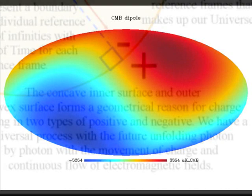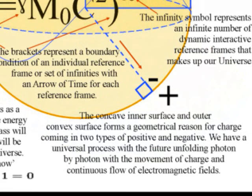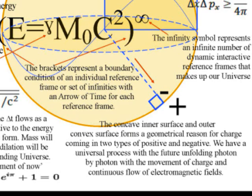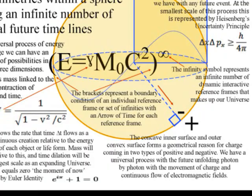In this theory, hyperbolic geometry was formed by the two-dimensional surface of the spherical harmonics, with the inner concave surface representing negative charge, and the outer convex surface forming positive charge. This forms a two-dimensional boundary condition, with the future unfolding photon by photon with the movement of positive and negative charge and a continuous flow of electromagnetic fields.